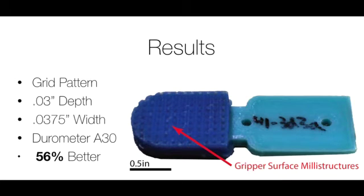Results suggest that a grid pattern with a 0.03 inch void depth and a 0.0375 inch void width on a silicone polymer with a durometer of A30 yields grasp robustness that is 56% better than that of planar rigid jaw surfaces.